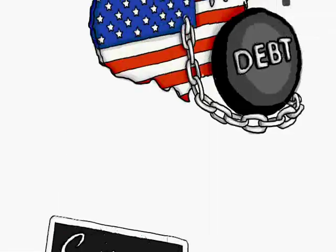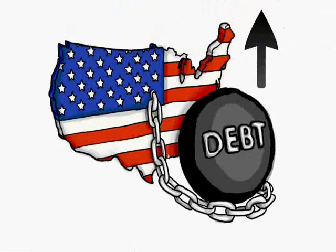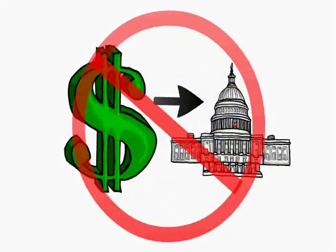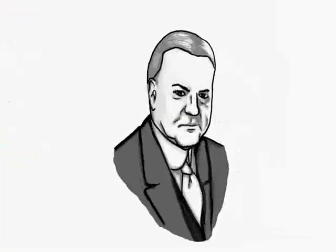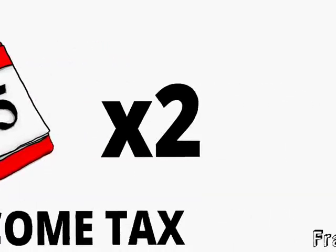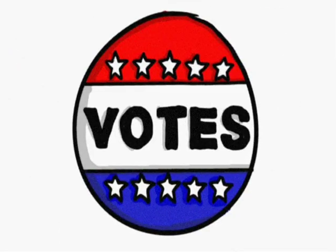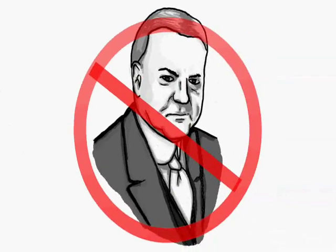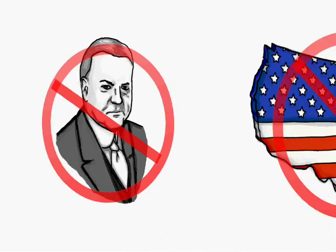As businesses close, the government deficit increases since no one can pay taxes. Instead of reducing government spending, Hoover doubles the income tax. President Roosevelt then wins the election, defeating Hoover, and promises to reverse Hoover's unpopular interventionist policies and reckless spending.